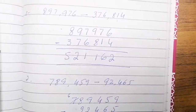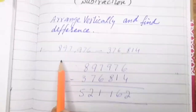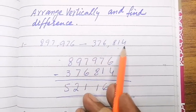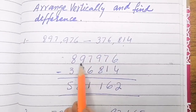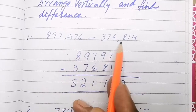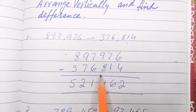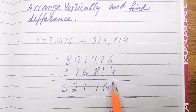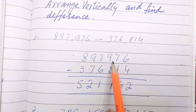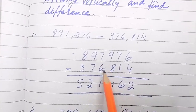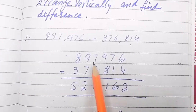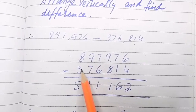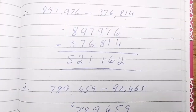Question number one: 8971976 minus 376814. We write this horizontally and then vertically. Subtracting column by column: 6 minus 4 is 2, 7 minus 1 is 6, 9 minus 8 is 1, 7 minus 6 is 1, 9 minus 7 is 2, 8 minus 3 is 5.